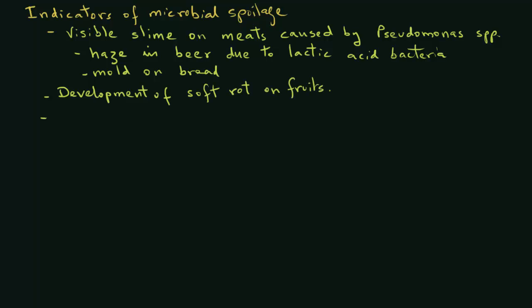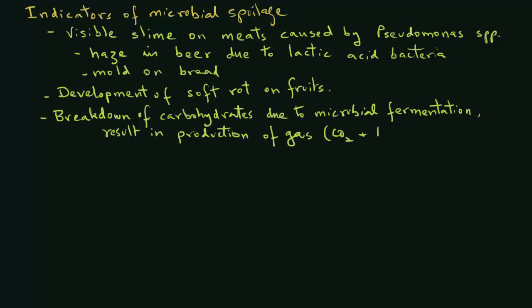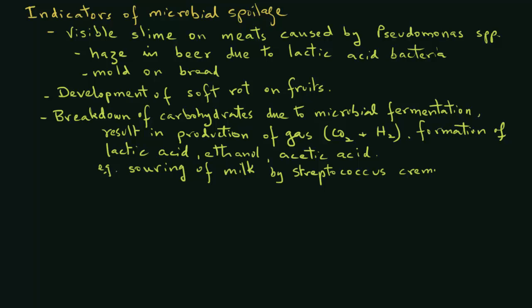There is also breakdown of carbohydrates due to microbial fermentation that results in production of gas, for example, carbon dioxide and hydrogen. There can be formation of lactic acids, ethanol, acetic acid. For example, there is a souring of milk by Streptococcus cremaoris, and also sausages become sour by the action of lactobacillus species.